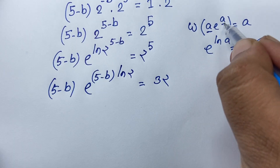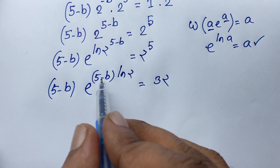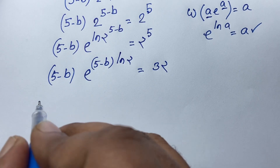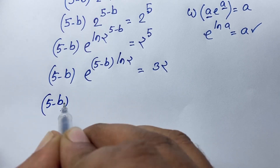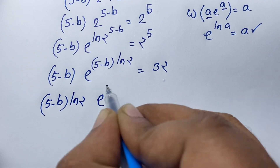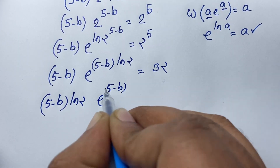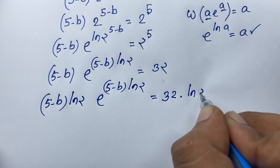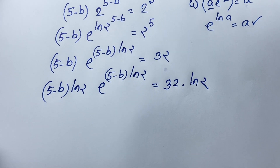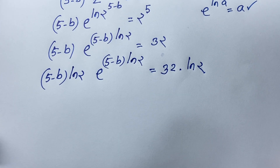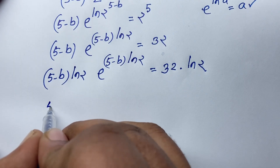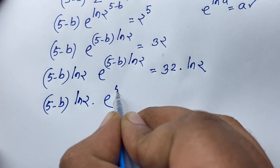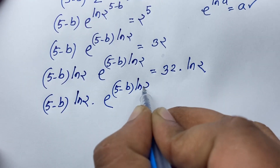We can see that (5 minus b) is our 'a' term, but we also need a factor of ln 2 to match the Lambert W form. So I multiply both sides by ln 2, giving: (5 minus b) times ln 2 times e to the power ((5 minus b) times ln 2) is equal to 32 times ln 2.